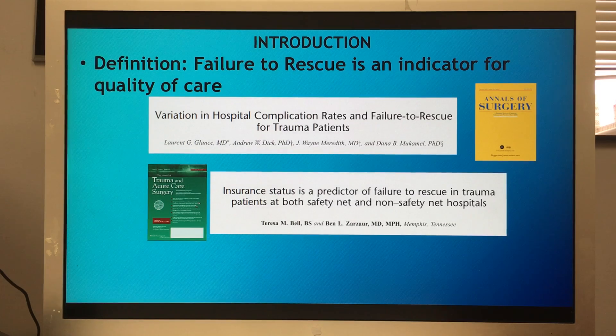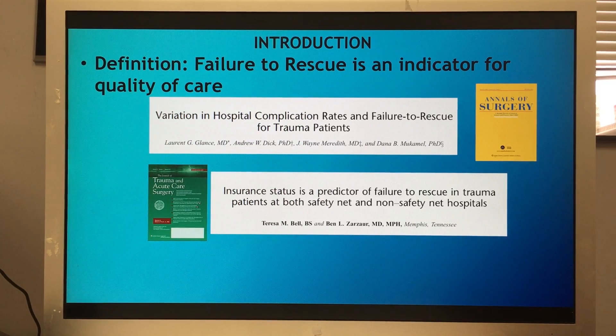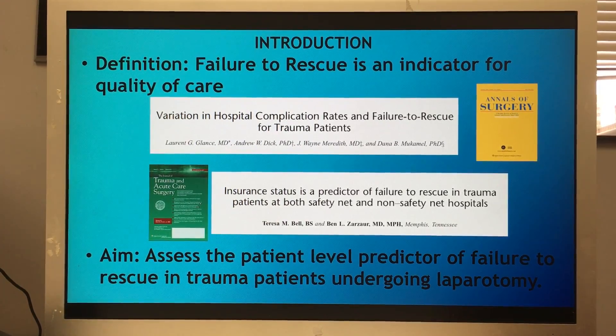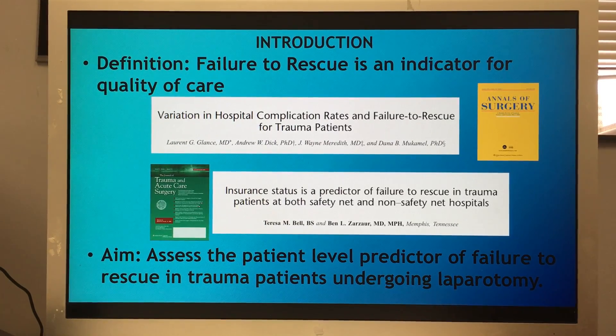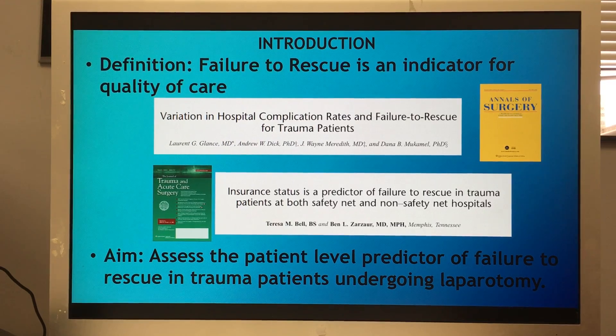Here's an example. We define failure to rescue as an indicator for quality of care. Here are some examples of reported literature and how to present just the titles and what journals they're from, and then we bring up the aim to talk about. We use animation to bring this up and highlight it. Every introductory slide should have a hypothesis or an aim on it.